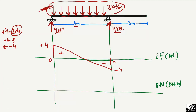To draw the bending moment diagram, we find the areas of the shear force regions — area A1 and area A2. Each region is a triangle with a base and height. The area of a triangle is equal to half base multiplied by height.